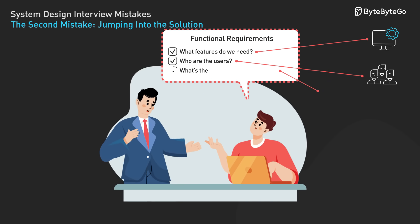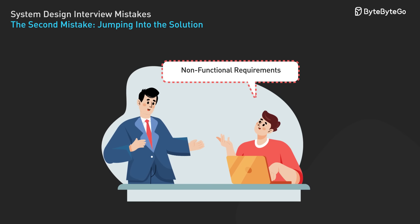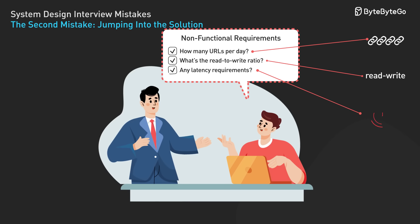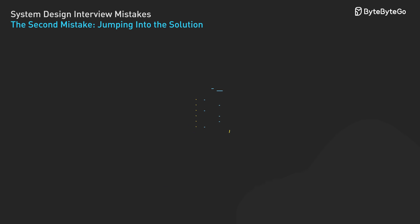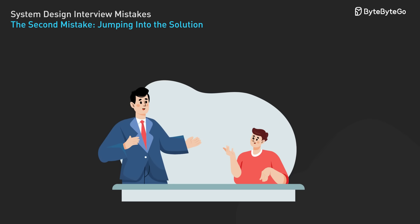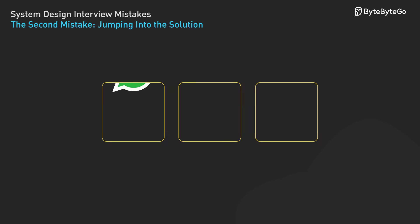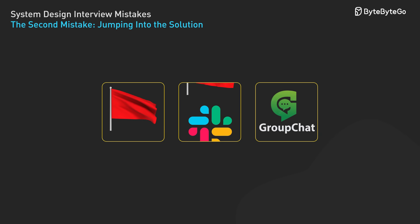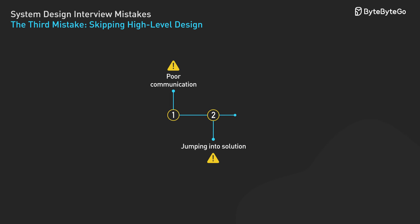Who are the users? What's the expected usage pattern? Ask about non-functional requirements — how many URLs per day? What's the read-to-write ratio? Any latency requirements? Document your assumptions. If the interviewer doesn't specify something, state your assumption clearly. This shows you understand that system design is about solving real problems.